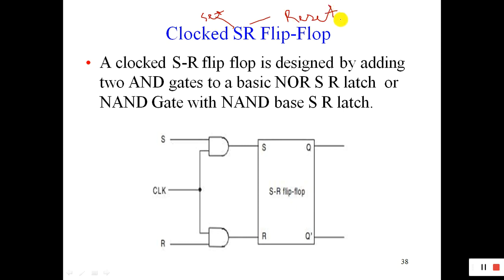In Reset, the output Q is 0 — whatever output you have, it will be 0. In Set, Q is equal to 1 or high, so whatever previous output you had, whether 0 or 1, it will become 1. In Reset it will be opposite.